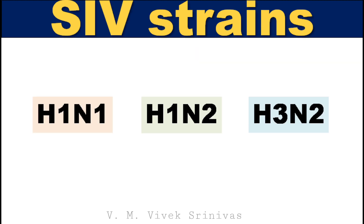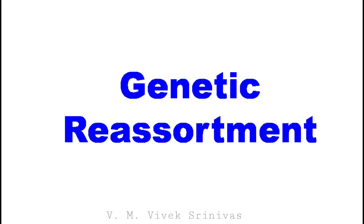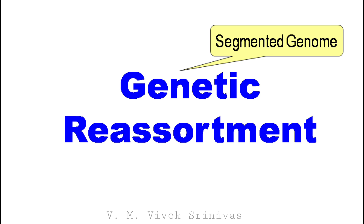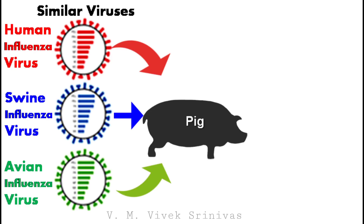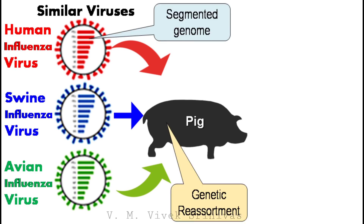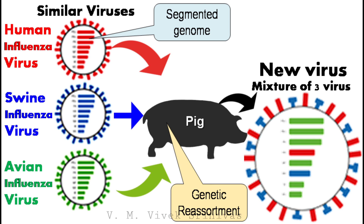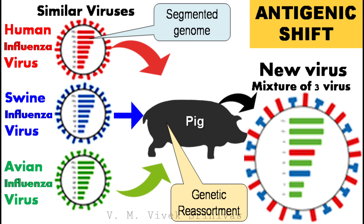Some of the strains causing swine influenza infection are H1N1, H1N2, and H3N2. The segmented genome may result in genetic reassortment, which may lead to evolution of a new virus. For example, if a pig is infected with three different virus species — human influenza virus, swine influenza, and avian influenza virus — at the same time, this pig acts as a mixing vessel. Due to reassortment of segments, that is genetic recombination, there may be evolution of a new hybrid virus. This type of major change in the virus is called antigenic shift.